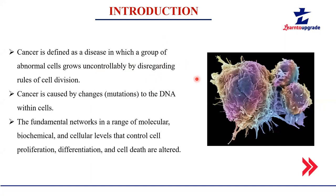What is the difference between a normal cell and a cancerous cell? In a normal cell, for one cell to divide into two, it must follow fundamental pathways at the molecular, biochemical, and cellular levels that control cell proliferation, differentiation, and cell death. Even cell death in a normal cell is programmed, which we call apoptosis. But in a cancerous cell, all these fundamental networks are not maintained properly due to mutations in the DNA.